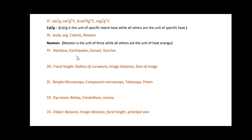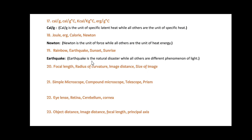Next: Rainbow, Earthquake, Sunset and Sunrise. Friends, here Earthquake is the odd one out. Since Earthquake is a natural disaster, while all others — Rainbow, Sunset and Sunrise — are different phenomena of light.